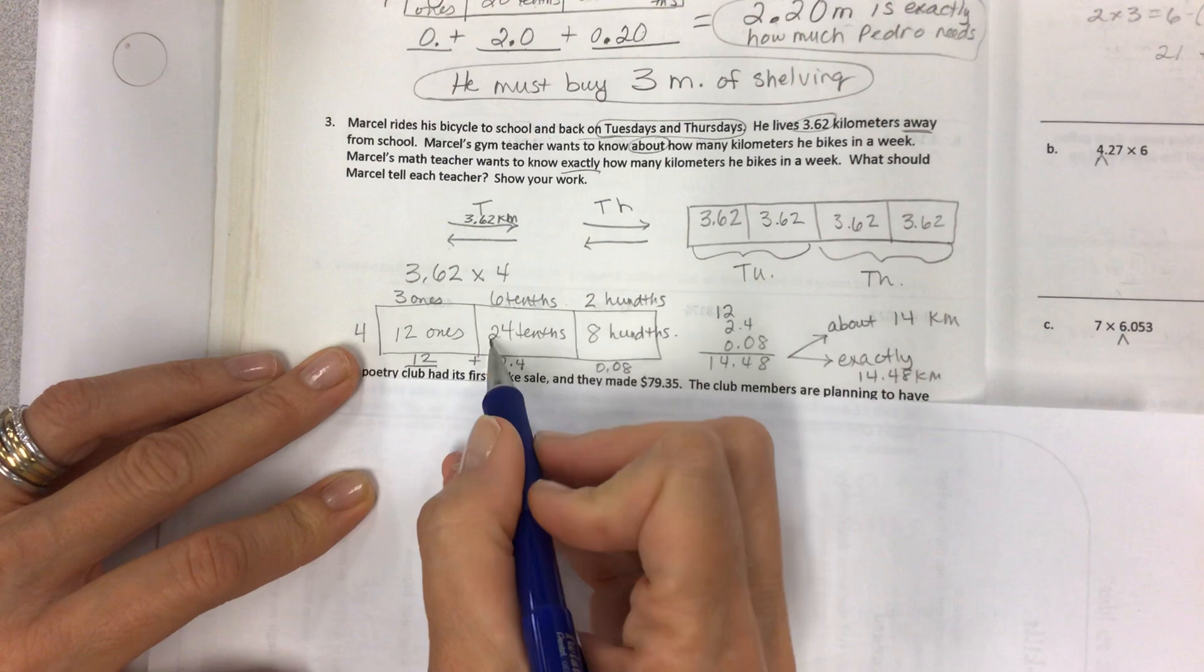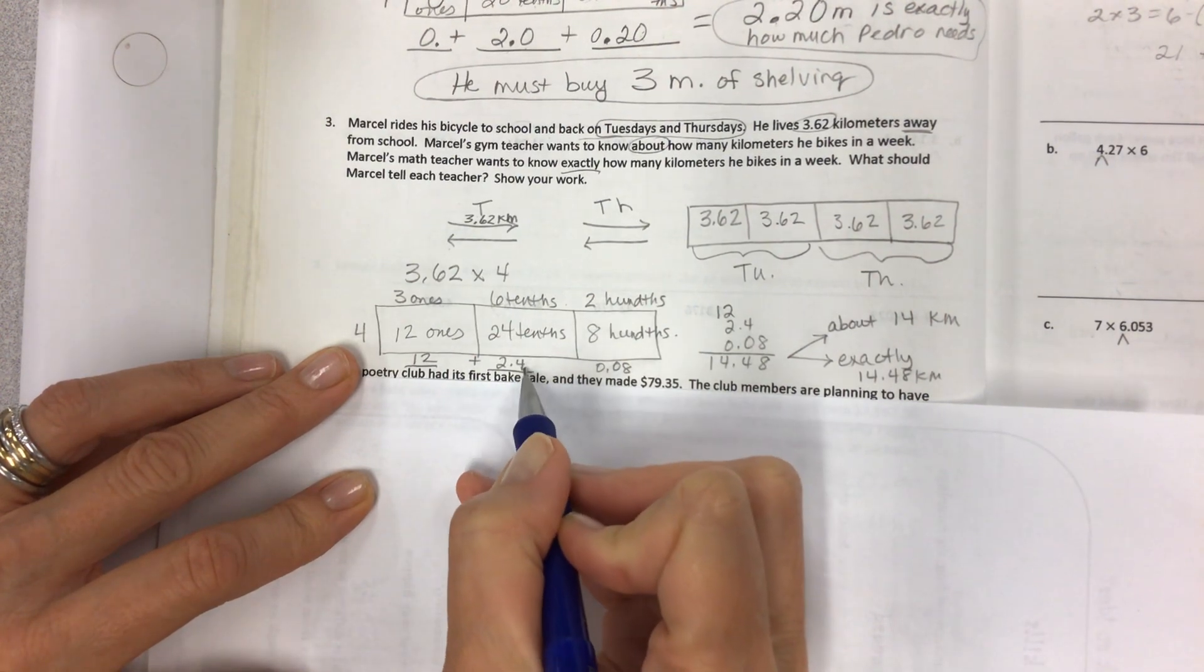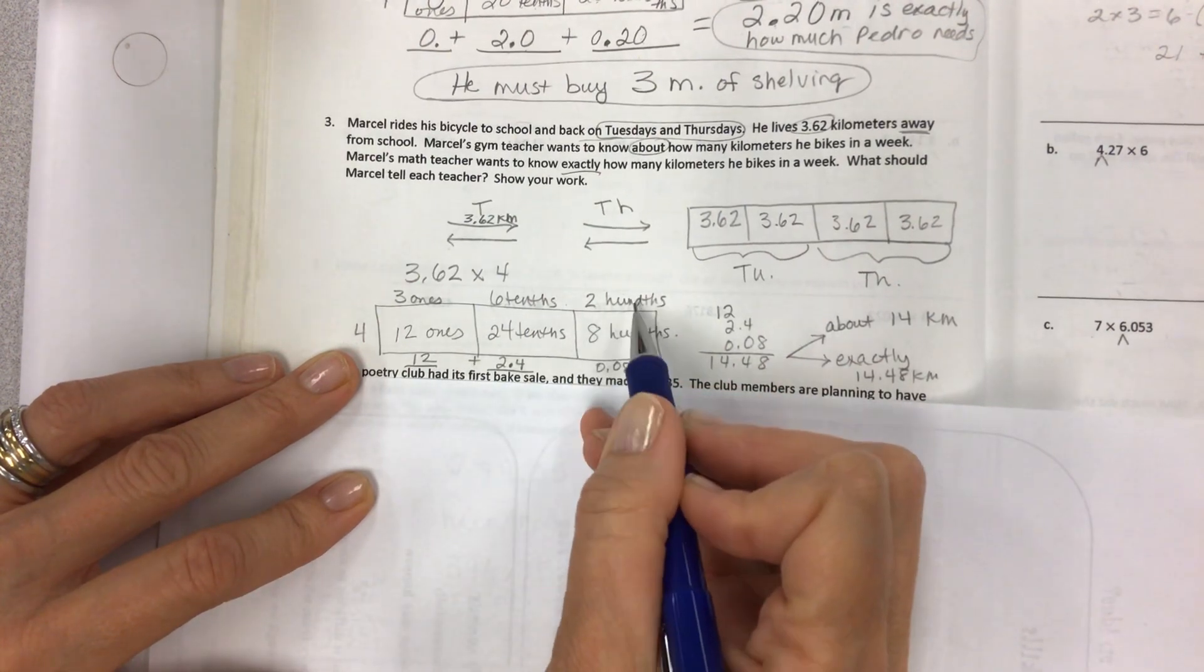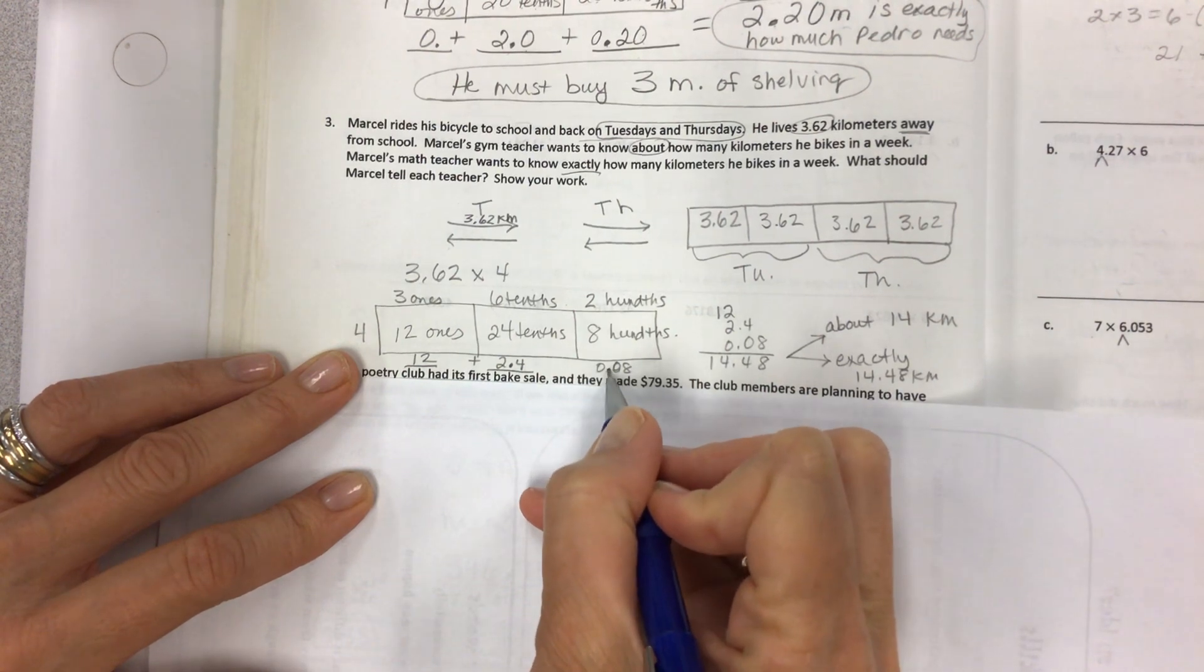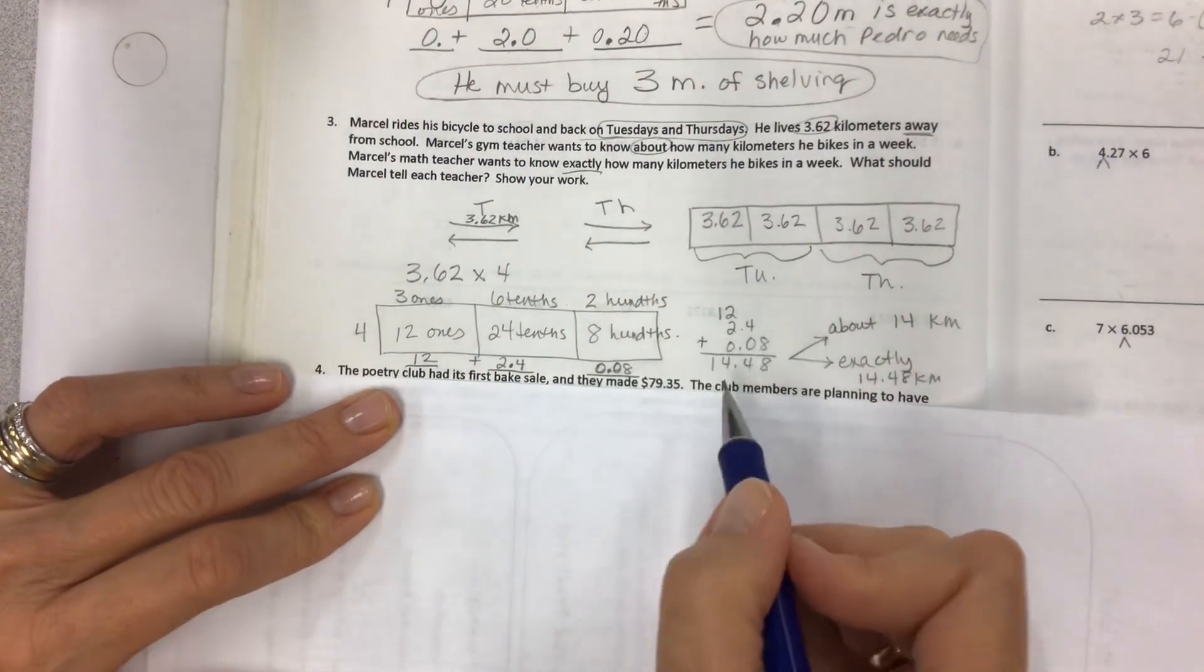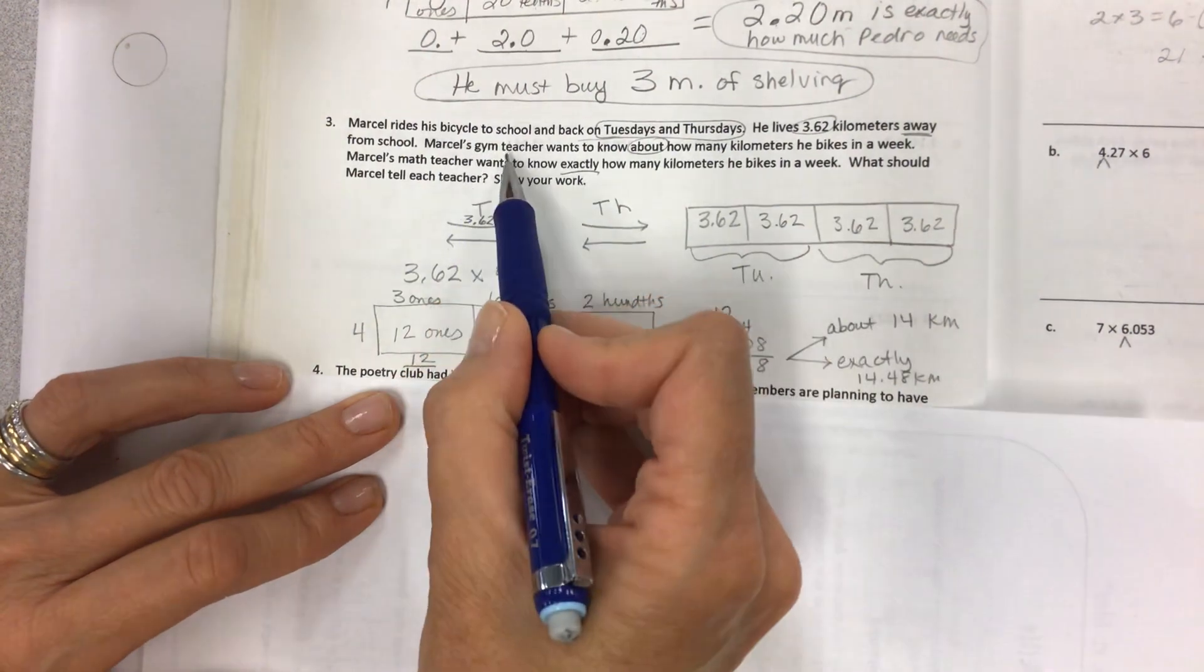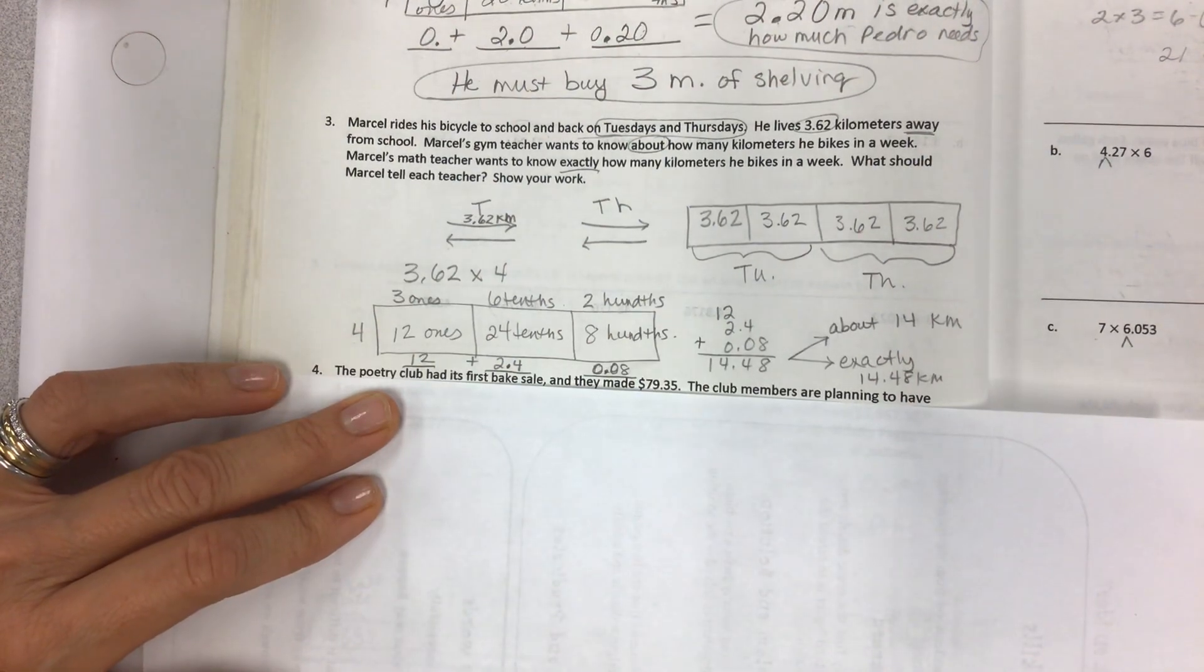And if you multiply four times three, then you have 12 ones, which looks like this. It's all smashed in. Six tenths times four for 24 tenths, which looks like this. Four in the tenths place, two in the ones place, 2.4. And then four times two is eight hundredths in the hundredths place. Don't forget the zero in the tenths place and the decimal and a zero in the ones. And then you can add all those together, adding. Now approximately what is that? Well, that's about 14 kilometers. That's for the gym teacher. And then exactly for the math teacher, 14 and 48 hundredths. So that's how you do these.